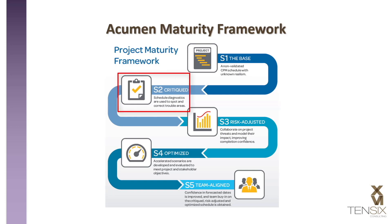S2, critiqued. The schedule is rigorously reviewed using Acumen Fuse metrics, and areas needing improvement are identified. Schedule changes are made in the original schedule software program or directly in Acumen S1. The exit criteria for this stage is a quality schedule as per Acumen recommended analysis and conformity to industry standards.